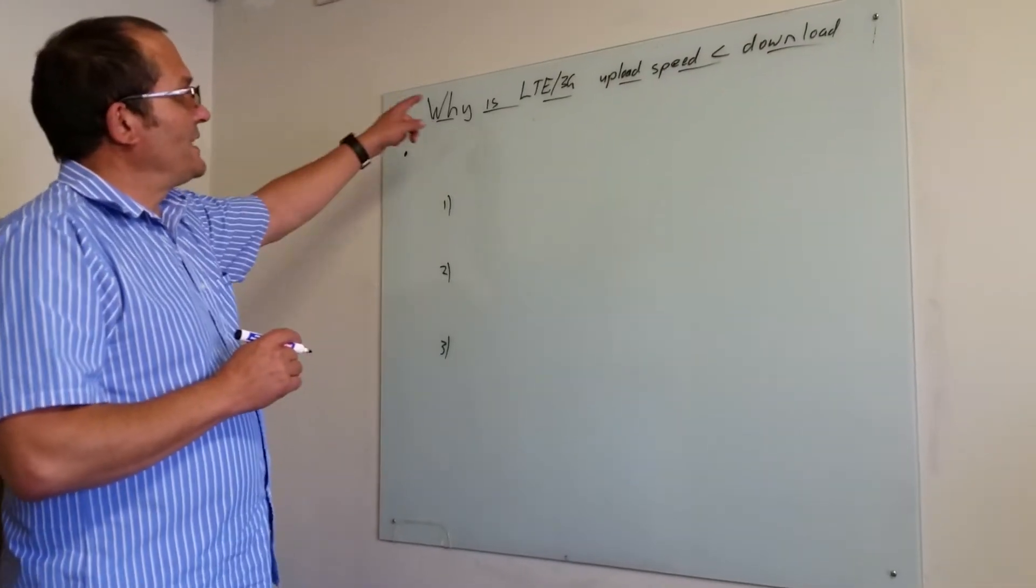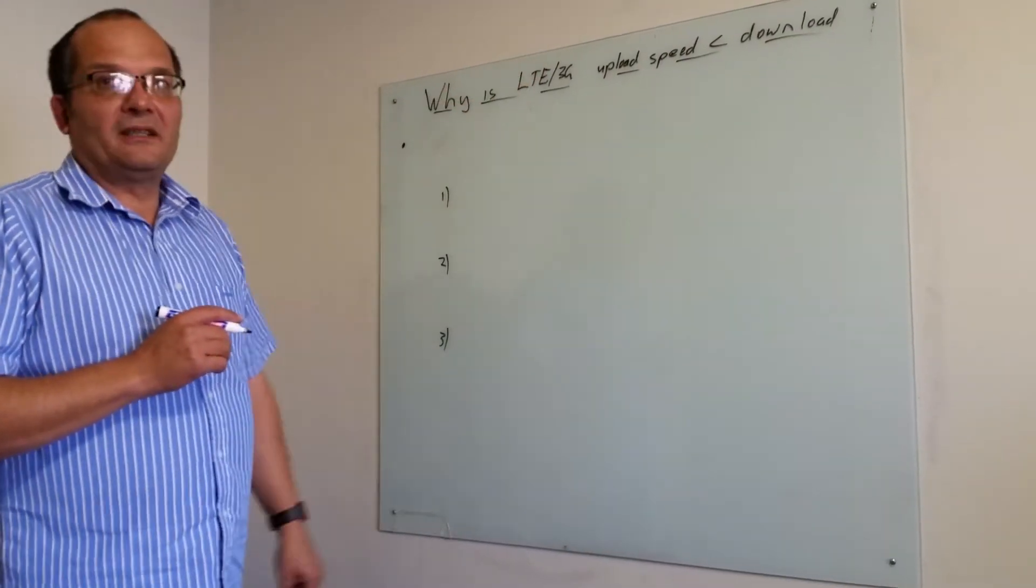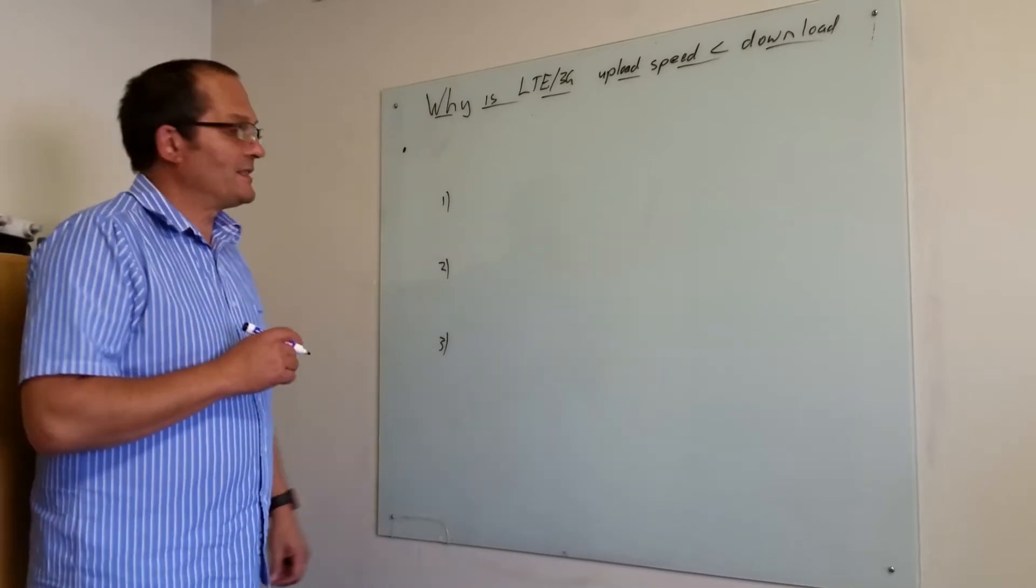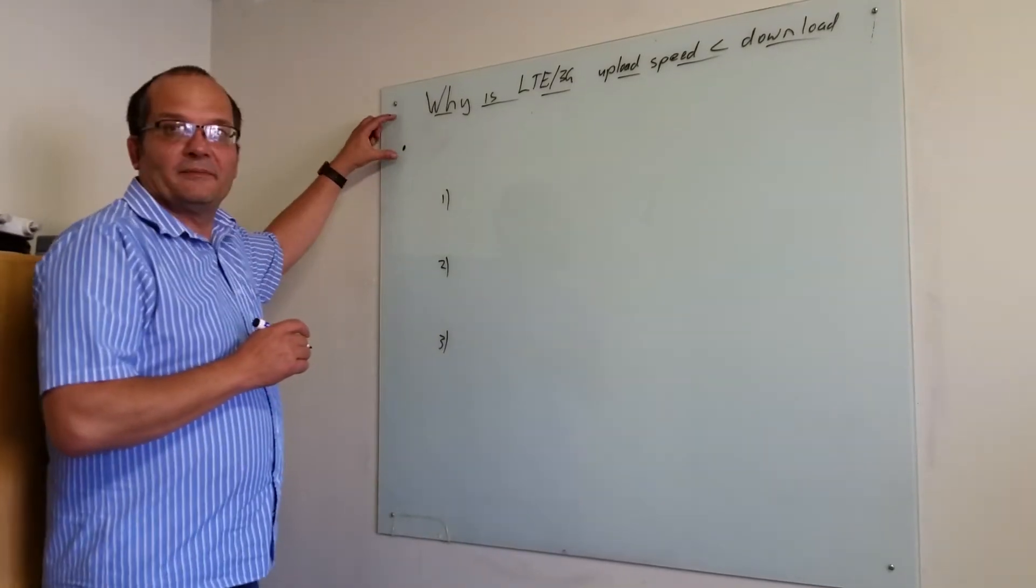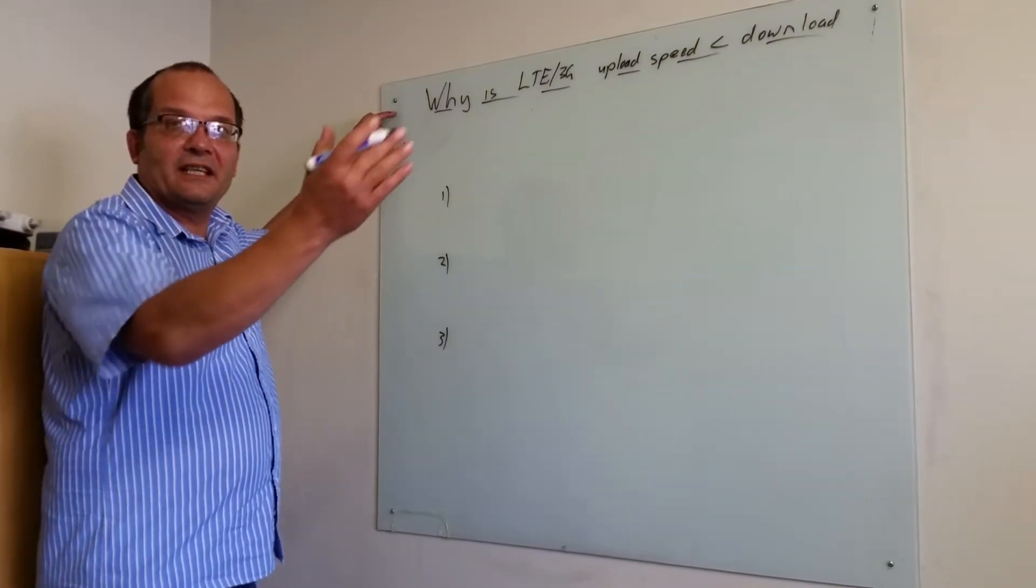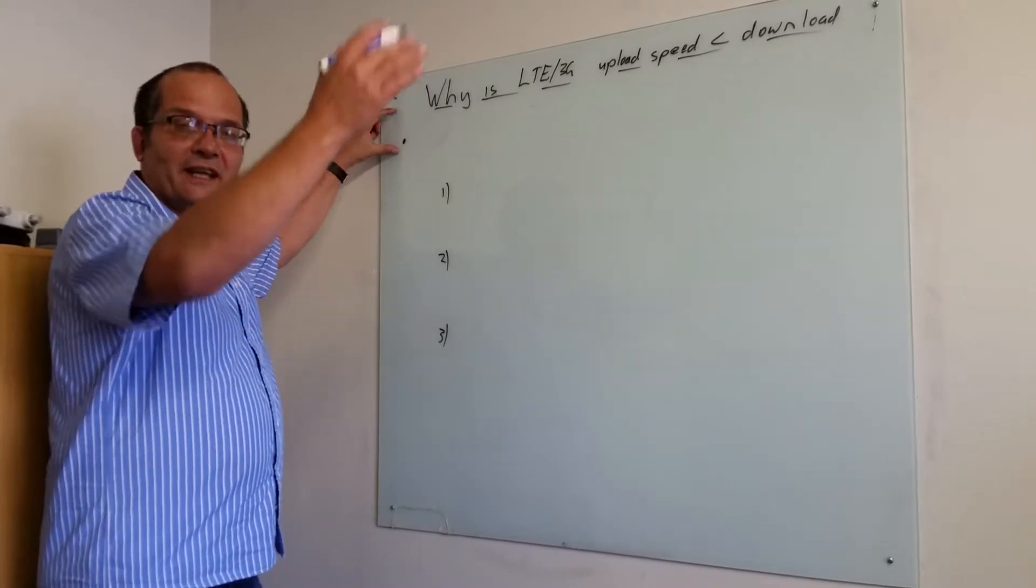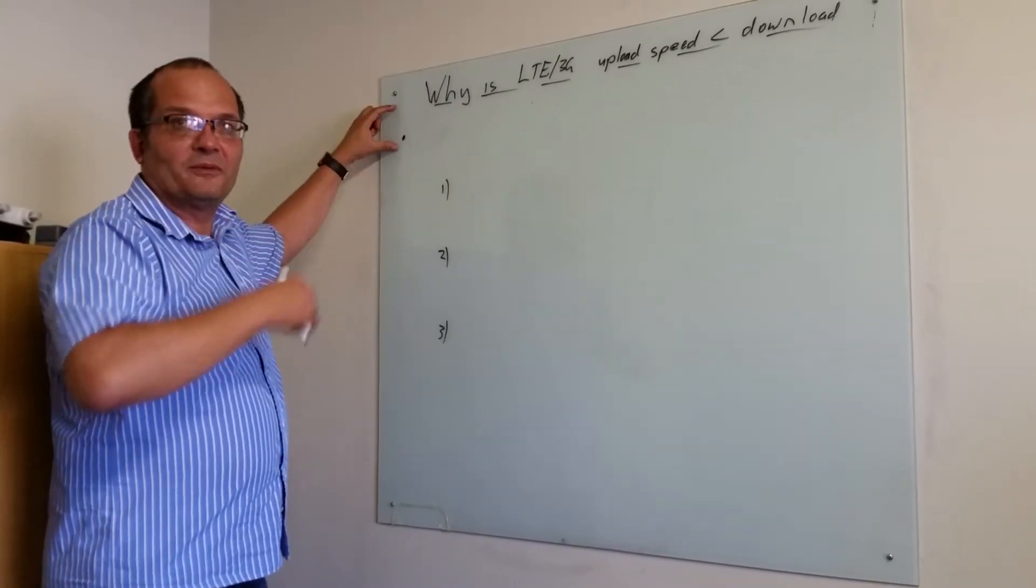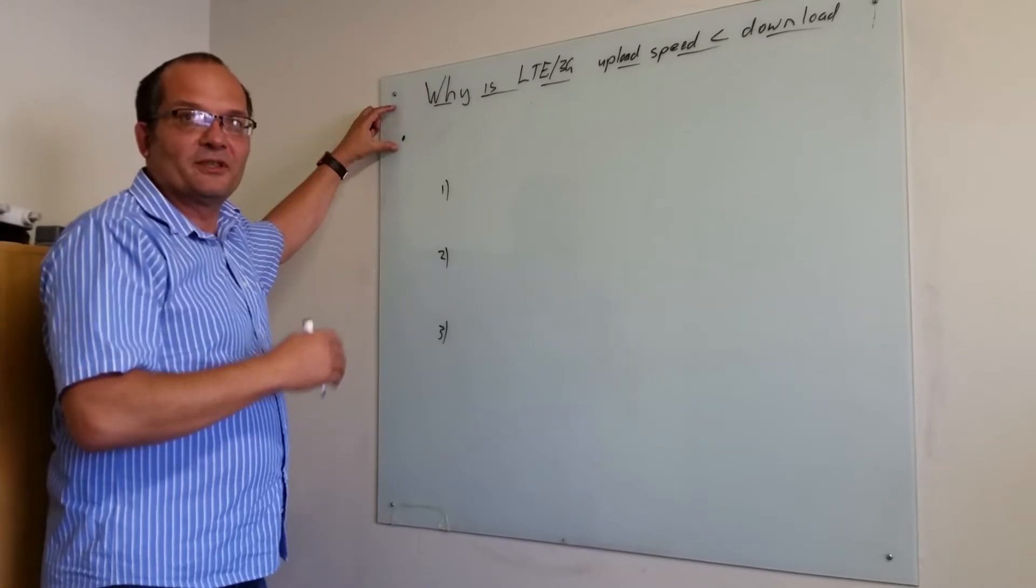We're all puzzled why LTE 3G upload speed is so much slower in many cases than download. It comes from the history. In other words, historically we said that because we're downloading websites, we're always downloading much more than what we're uploading. We just request and down comes huge amounts of info.